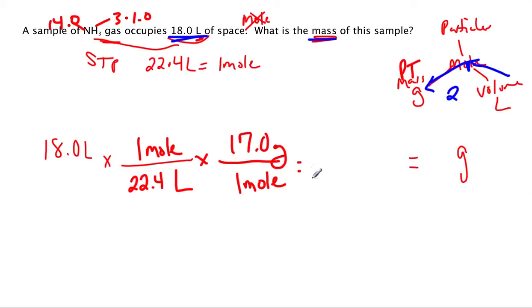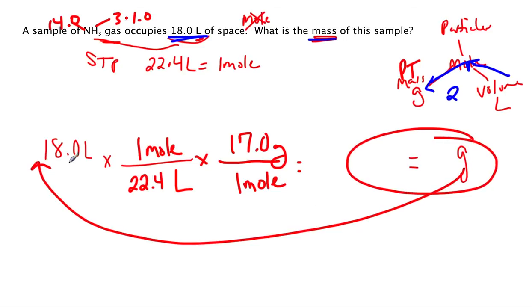Use your periodic table to figure out the mass of one mole. So 18 times 1 divided by 22.4 times 17 divided by 1 equals, and when you're done that's going to equal the mass of 18 liters.